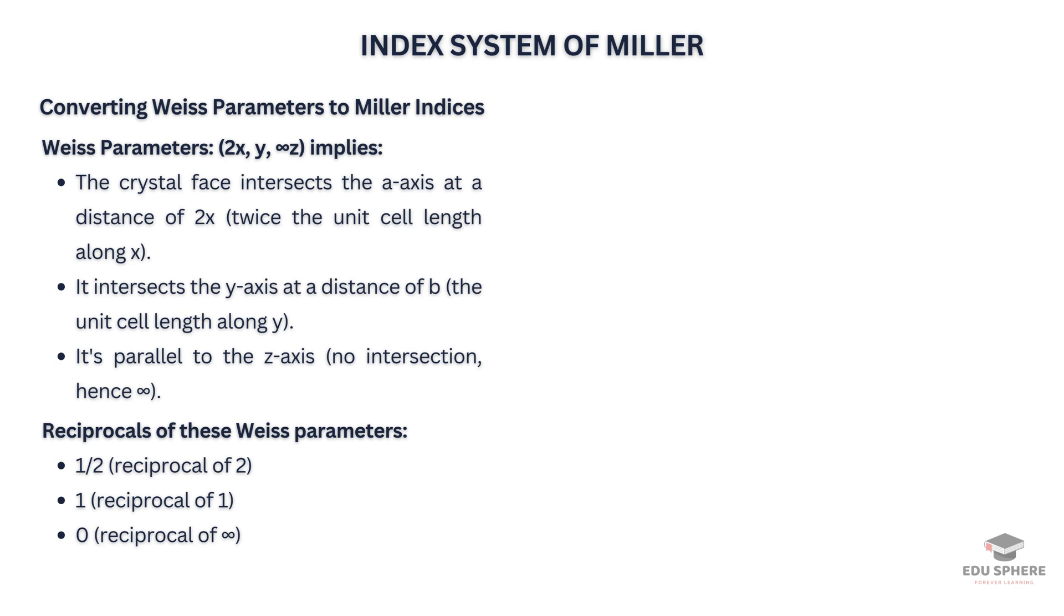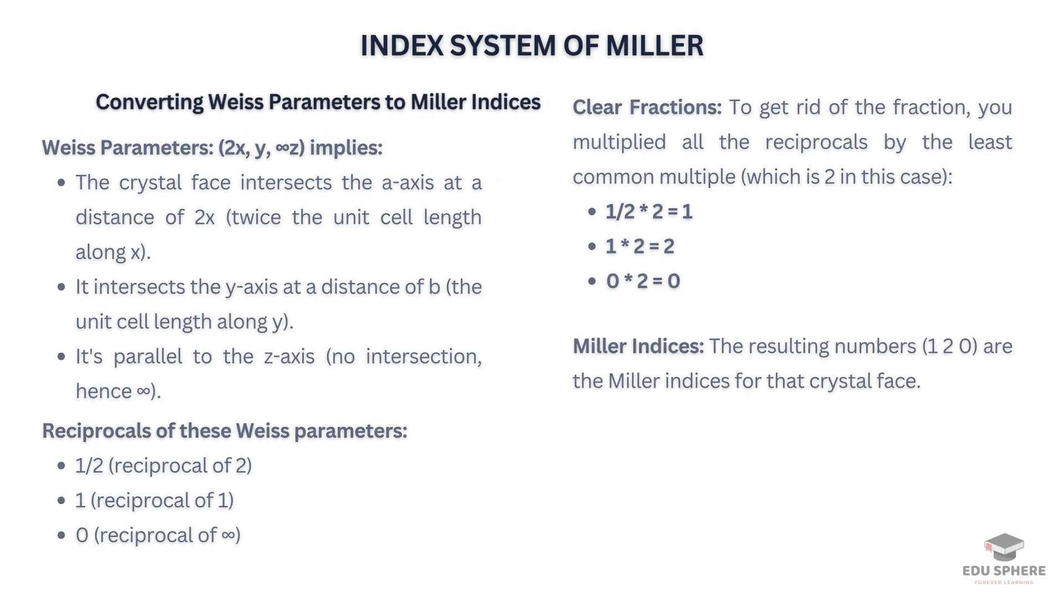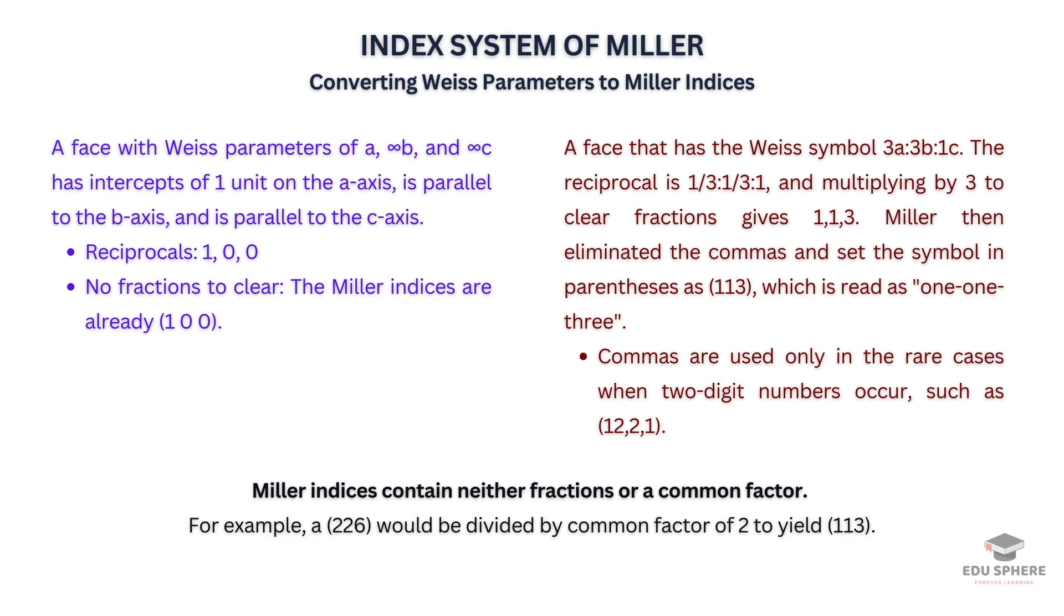The reciprocals of these Weiss parameters are 1/2, 1, and 0. Multiplying by 2, we get 1, 2, and 0. So there you have it: we've successfully converted Weiss parameters to Miller indices. Here are some more examples of converting Weiss parameters to Miller indices.